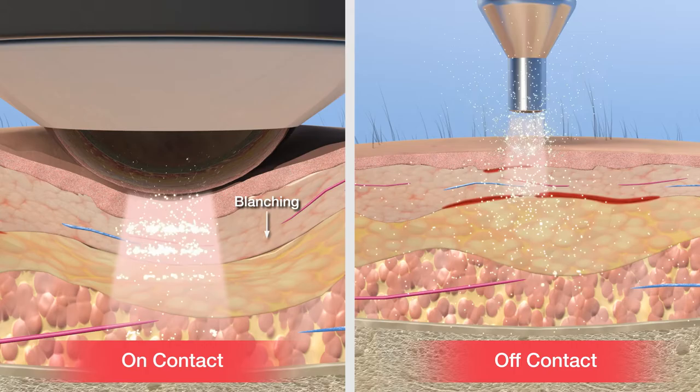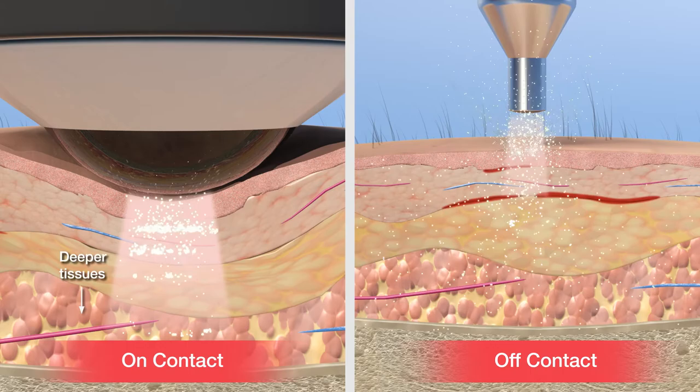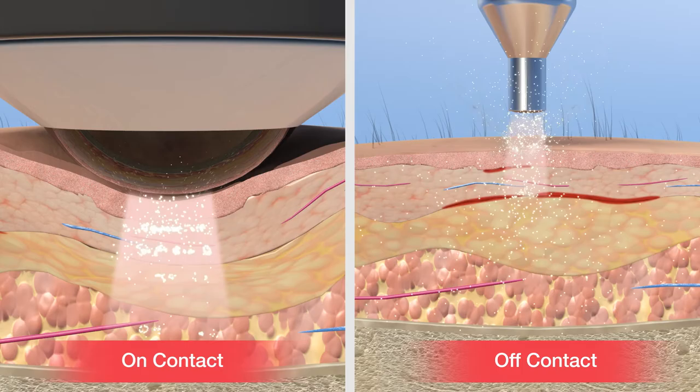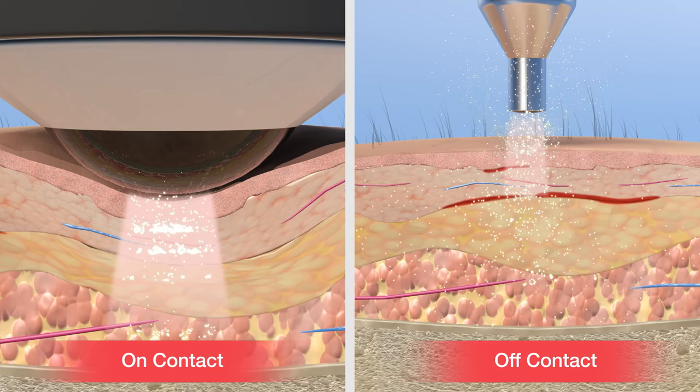These factors attenuate photon penetration to deeper tissues. Therefore, when treating off-contact, more energy is necessary to deliver the same number of photons at depth that could be delivered in an on-contact mode. When treating on-contact, reflection from the skin, as well as absorption and scatter from intervening tissues are reduced, resulting in more efficient delivery of energy.